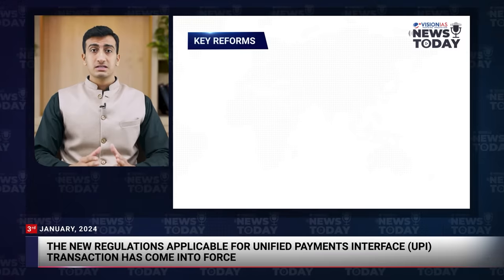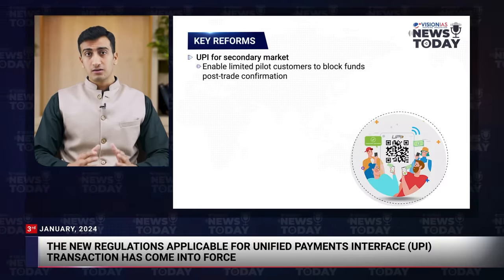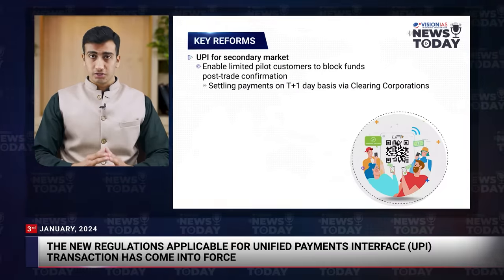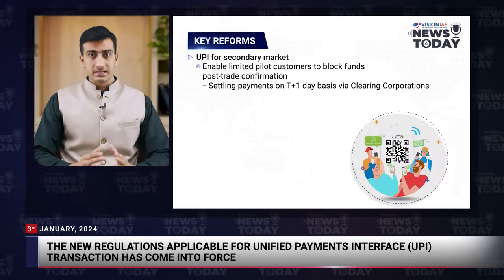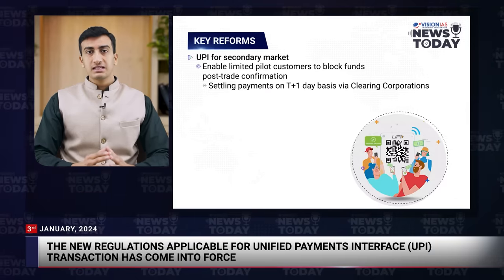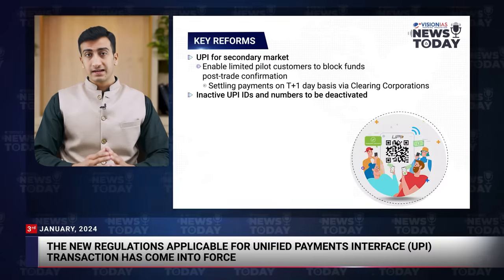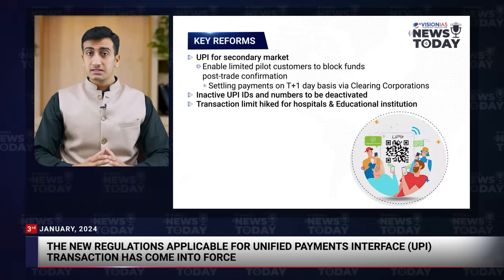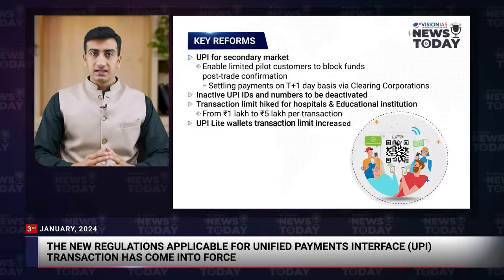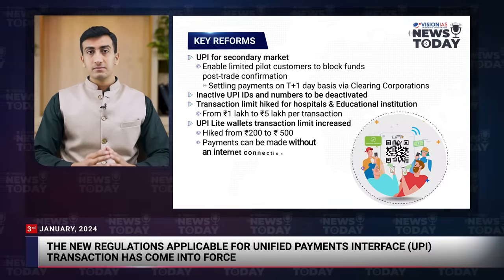Key reforms introduced include the introduction of UPI for the secondary market, allowing limited pilot customers to block funds post-trade confirmation and settling payments on a T+1 day basis through clearing corporations. The T+1 day settlement rule mandates that trade-related settlements must be completed within one day from the transaction date. Additionally, inactive UPI IDs and numbers will be deactivated after accounts have been inactive for one year. Transaction limits for hospitals and educational institutes have been raised from Rs 1 lakh to Rs 5 lakh per transaction. UPI light wallets now have an increased transaction limit of Rs 500, up from Rs 200, enabling payments without an internet connection.